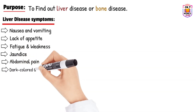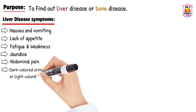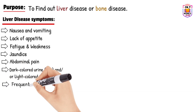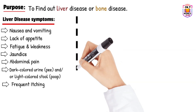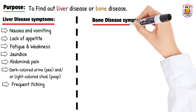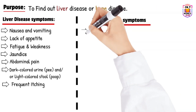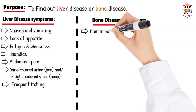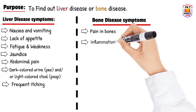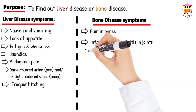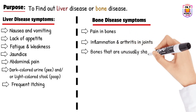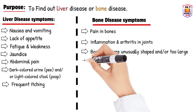Other liver disease symptoms include dark-colored urine or light-colored stool, and frequent itching. If there is a bone disease, the doctor will recommend an ALP test for symptoms such as: bone pain, inflammation and arthritis in joints, bones that are unusually shaped or too large, and broken bones.